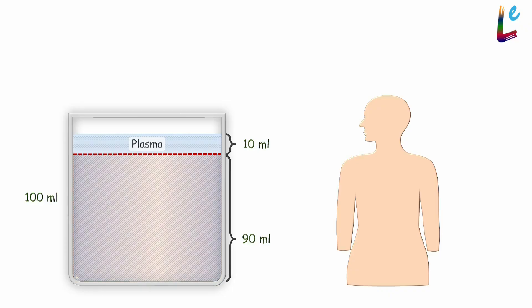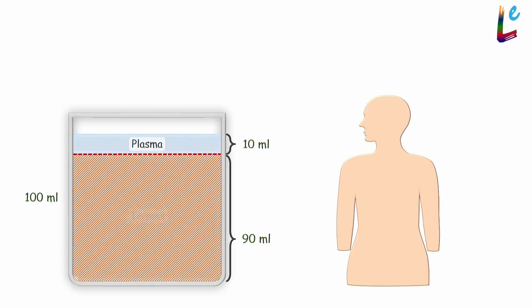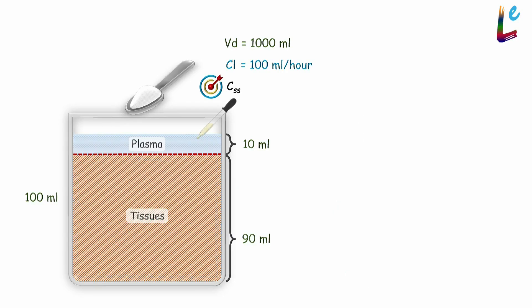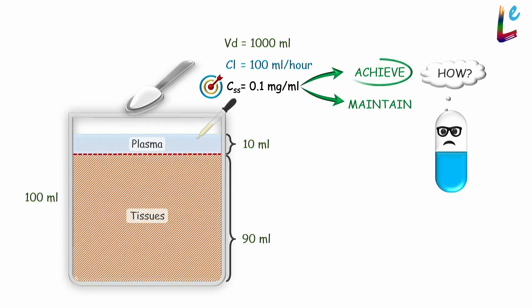Let's consider a drug that has a volume of distribution of 1000ml and a clearance of 100ml per hour. Assume that the target steady state plasma concentration is 0.1mg per ml. Now how do we quickly achieve this target steady state plasma concentration?